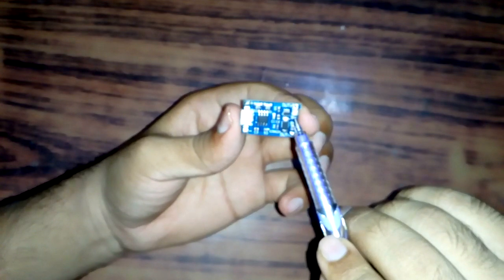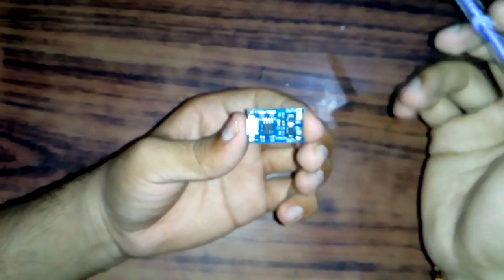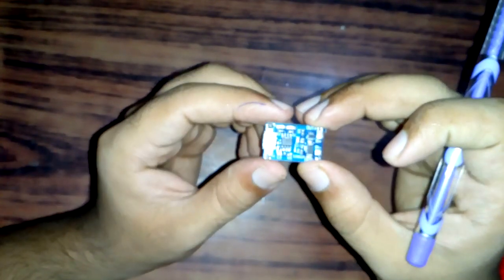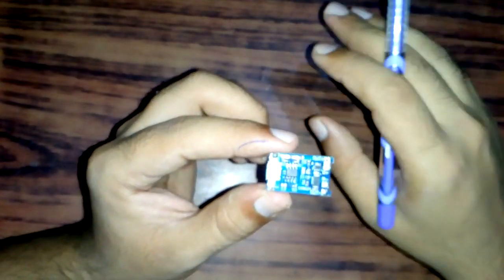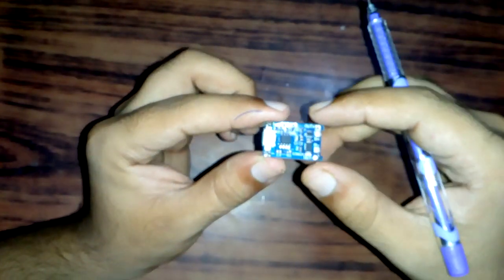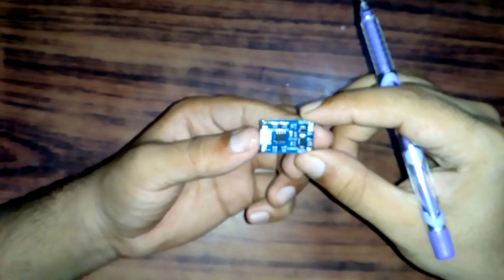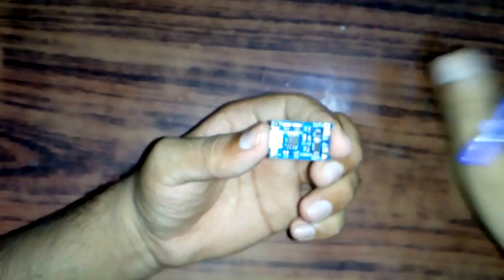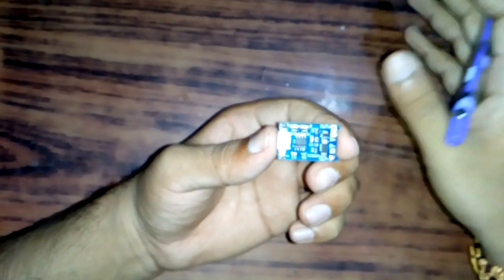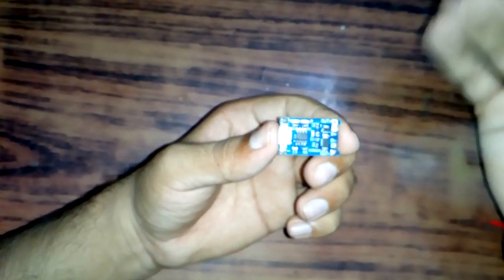Based on the TP4056 and DW01 battery protection IC, this module offers one ampere charging current and it cuts off automatically when you finish charging.